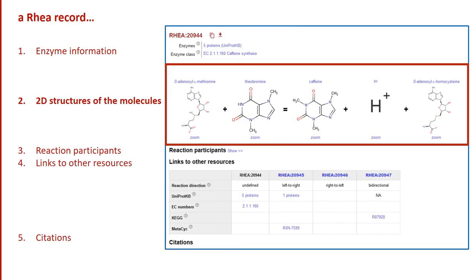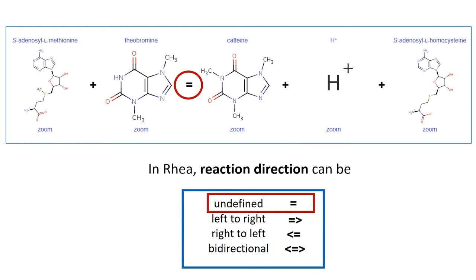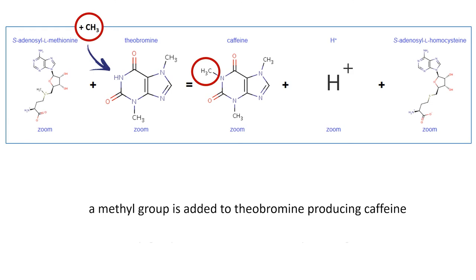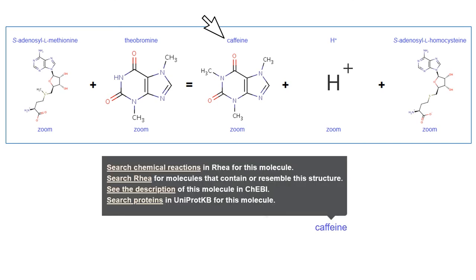The 2D structure representation of the molecules helps us understand the reaction. The equal sign tells us that the direction of this reaction is undefined. We can see that a methyl group of S-Adenosyl-L-methionine is transferred to the nitrogen group of theobromine in order to produce caffeine. Like everywhere throughout the RIA website, all reaction participants are clickable and linked to a wealth of related information.